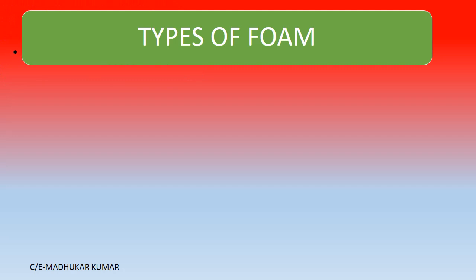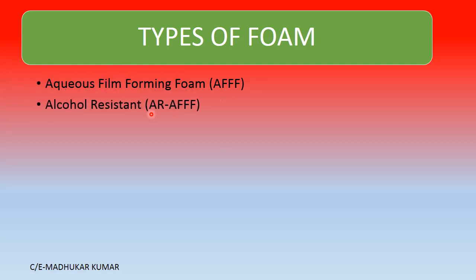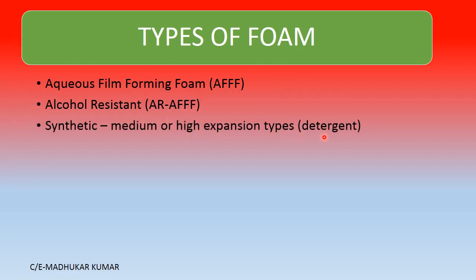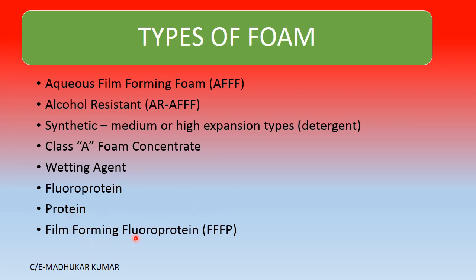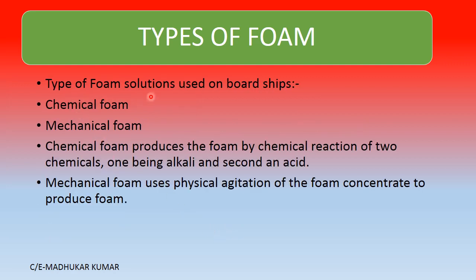Now let's look at the different types of foam. First is aqueous film-forming foam — AFFF — based on a mixture of hydrocarbon and fluorinated surface-active agents. Next is alcohol-resistant AR-AFFF, utilized on chemical tankers. Then there is synthetic medium or high expansion foam — detergent foam. You also have Class A foam concentrate, wetting agents, fluoroprotein foam, protein foam (earlier animal proteins were used), and film-forming fluoroprotein foam — FFFP. The two broad solution types used on board are chemical foam, produced by a chemical reaction between an alkali and an acid, and mechanical foam, produced by physical agitation of the foam concentrate.